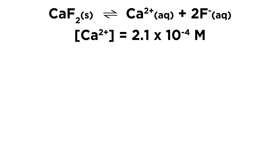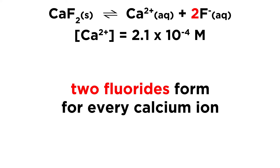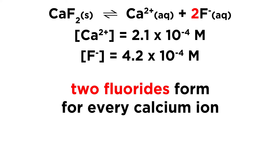So what can we do with this information? We know that fluorite is going to dissolve to give a calcium ion and two fluoride ions. So if enough fluorite has dissolved to give a calcium ion concentration of that magnitude, then the fluoride ion concentration must be double that, because there are two fluorides that form for every calcium ion. So the fluoride ion concentration must be 4.2 times 10 to the negative 4 molar — exactly double the calcium ion concentration. We figured that out just by stoichiometry.